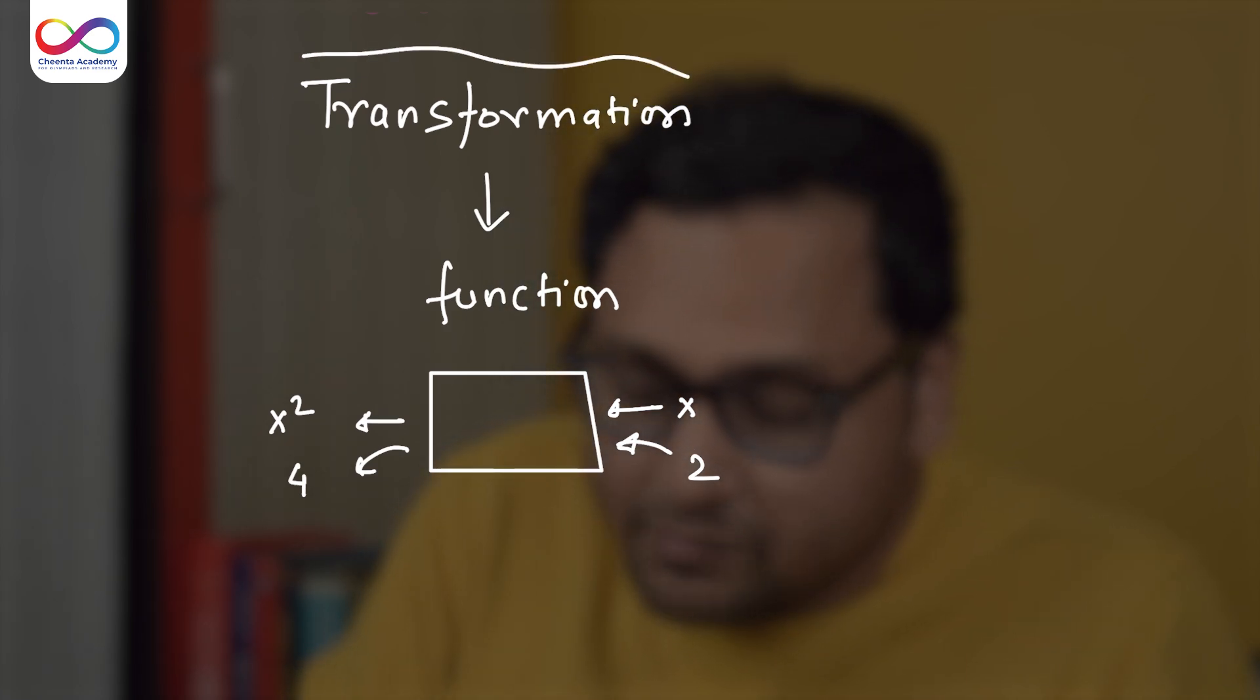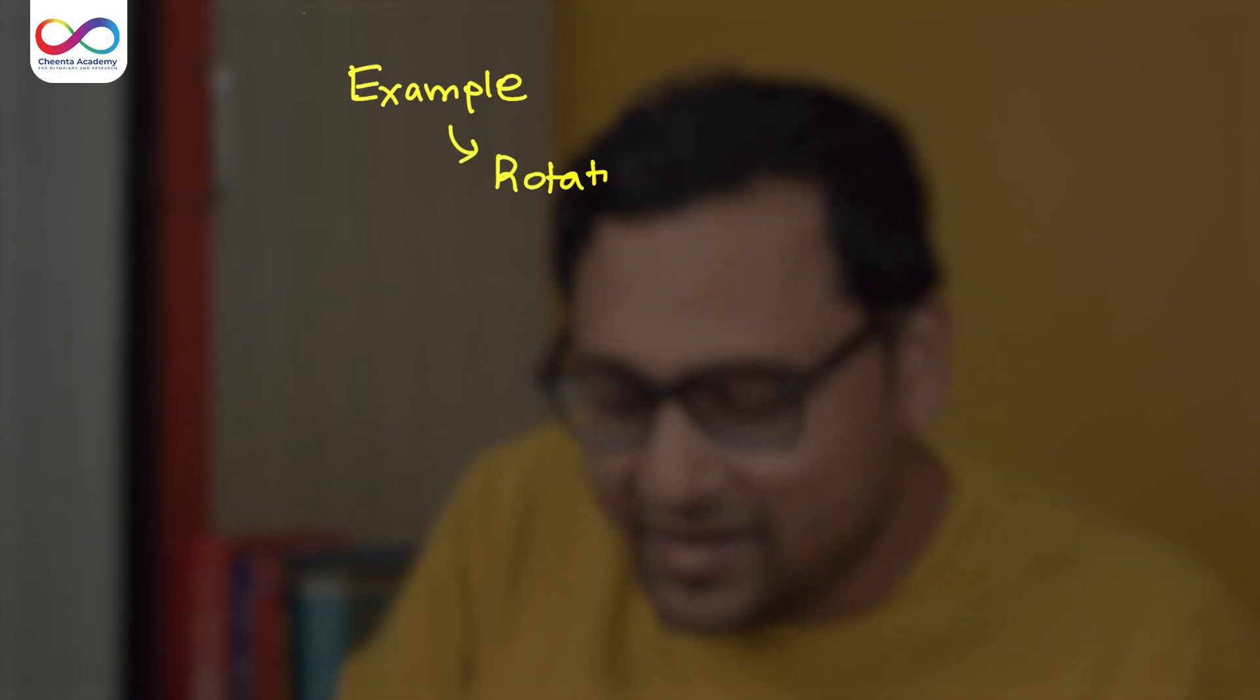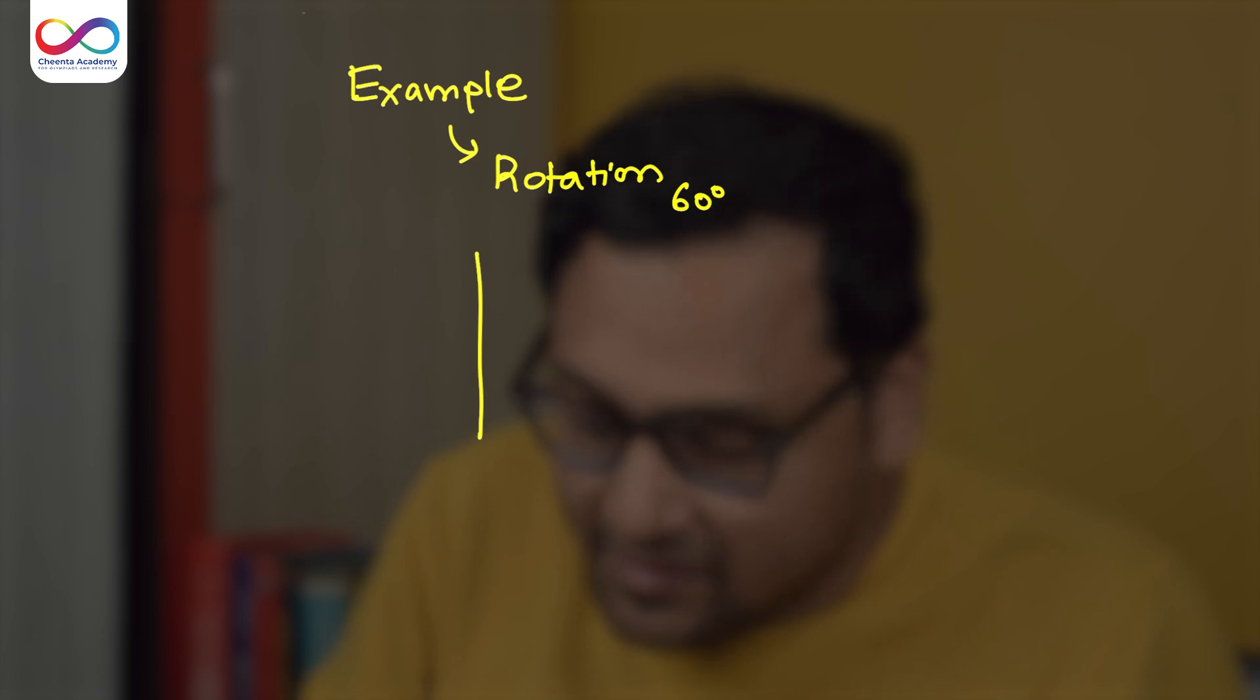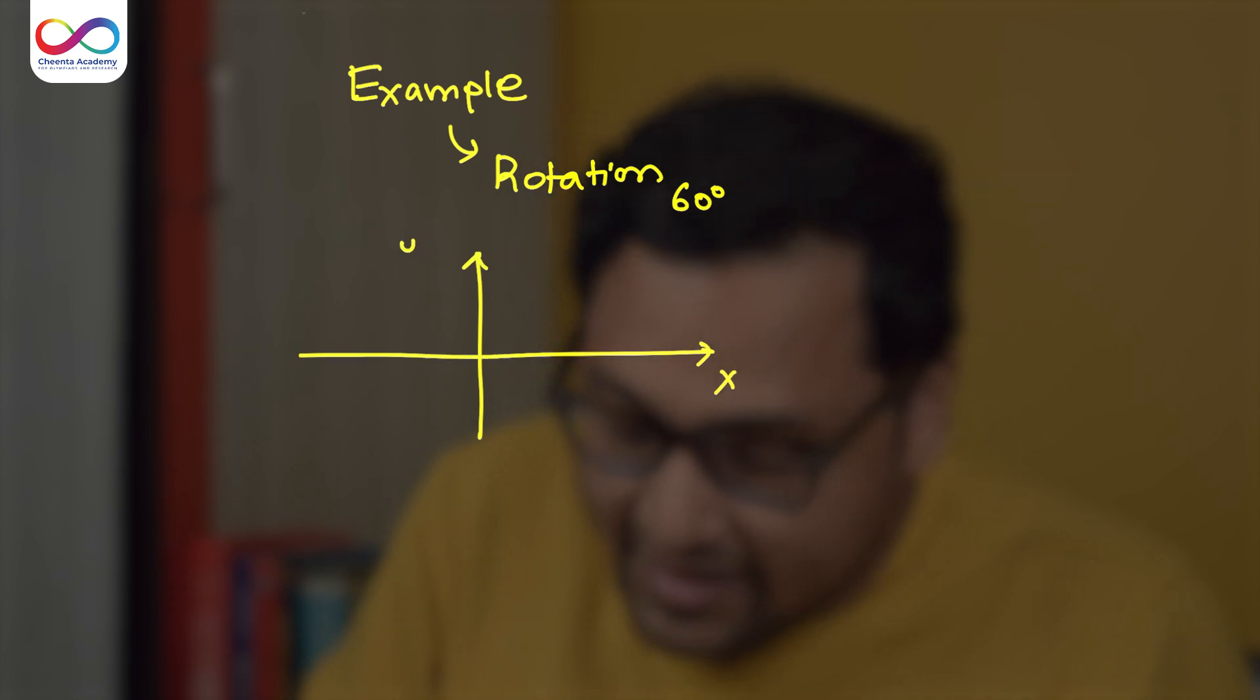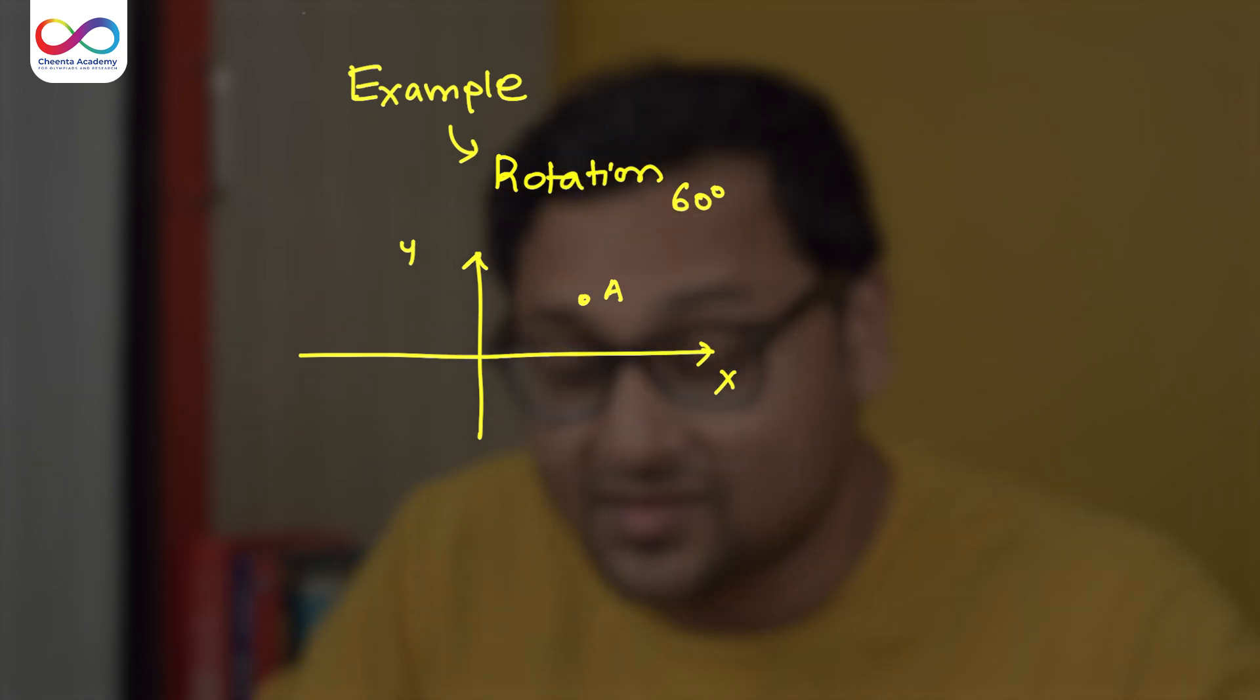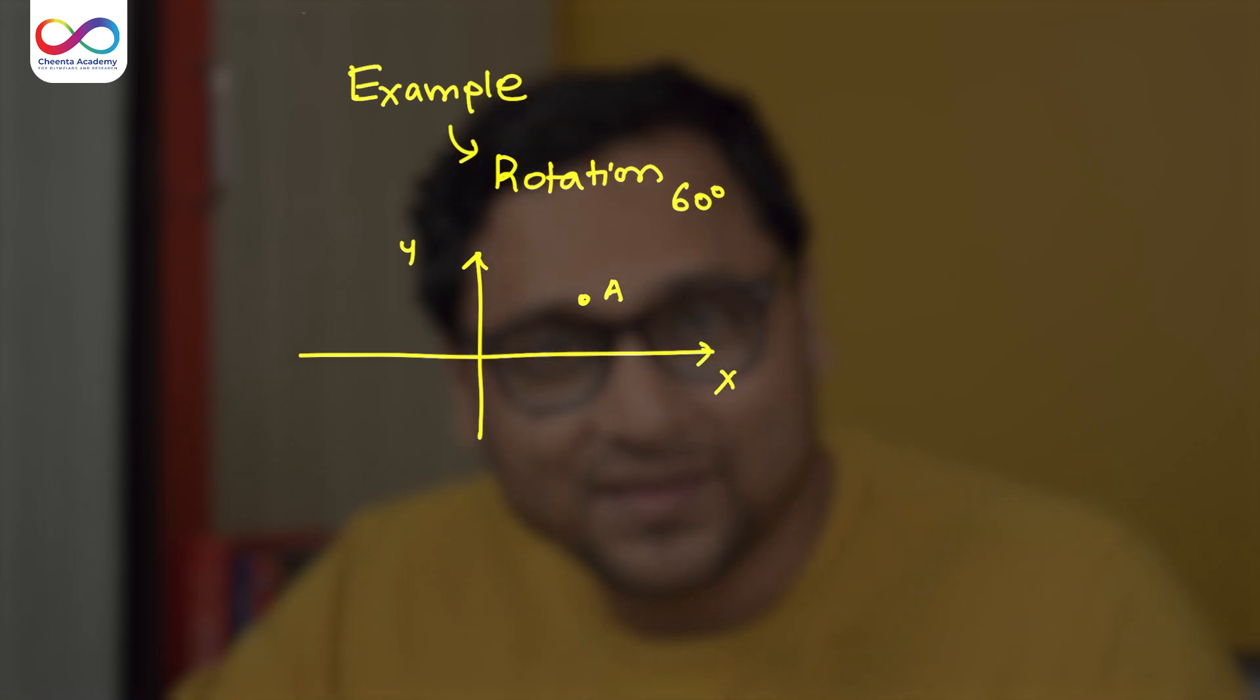Geometric transformations are functions which take input as a point and gives output as another point. I'll give you one example. One simple but effective example is a rotation. Let's say rotation by 60 degree, counterclockwise. If I take the plane, x-y plane, and if I take a point A, and if I apply this transformation, this rotation by 60 degree is a transformation.